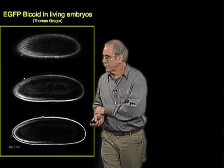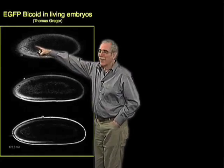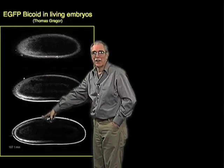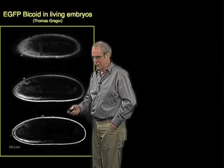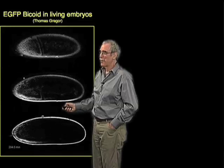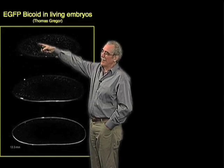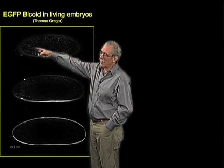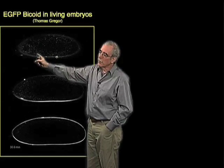While I've been talking, this embryo has established a bicoid gradient. What we're going to do is go back and watch this movie one more time, so we can see the bicoid gradient forming in this living embryo.